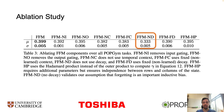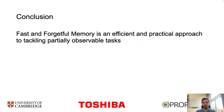We ablated various components of our model. Surprisingly, we found that when we removed forgetting, denoted here in orange, we performed much worse than a standard RNN such as the GRU. This is in contrast to many modern memory models, which attempt to store as much information as they can for as long as possible, such as state-space models or transformers. To conclude, fast and forgetful memory is an efficient and practical approach to tackling partially observable tasks in reinforcement learning. Thanks for your time.